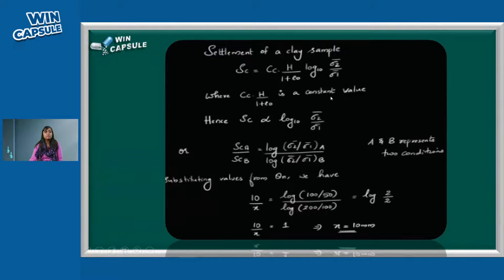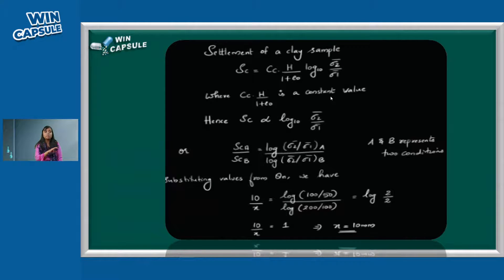Settlement is proportional to log₁₀(σ₂/σ₁), where σ₁ is initial stress and σ₂ is final stress. So: when stress goes from 50 to 100, settlement is 10mm — that is, log₁₀(100/50) = log₁₀(2). Then when stress goes from 100 to 200, log₁₀(200/100) = log₁₀(2) again. Since the log values are the same, the further settlement is also 10mm.